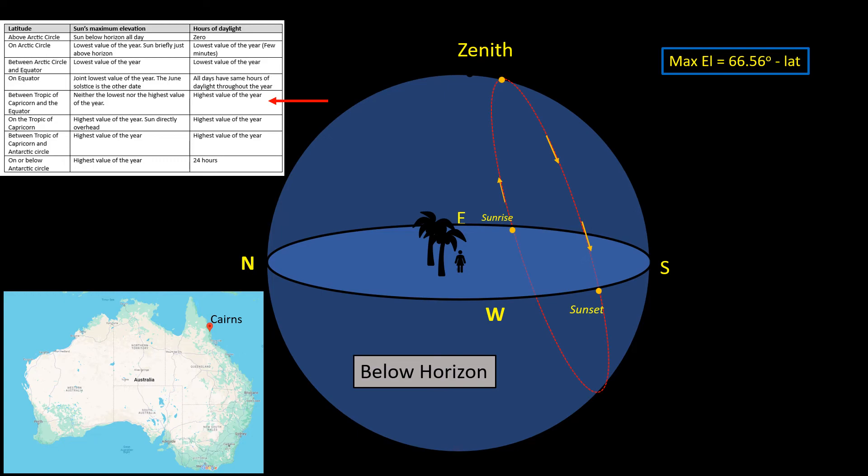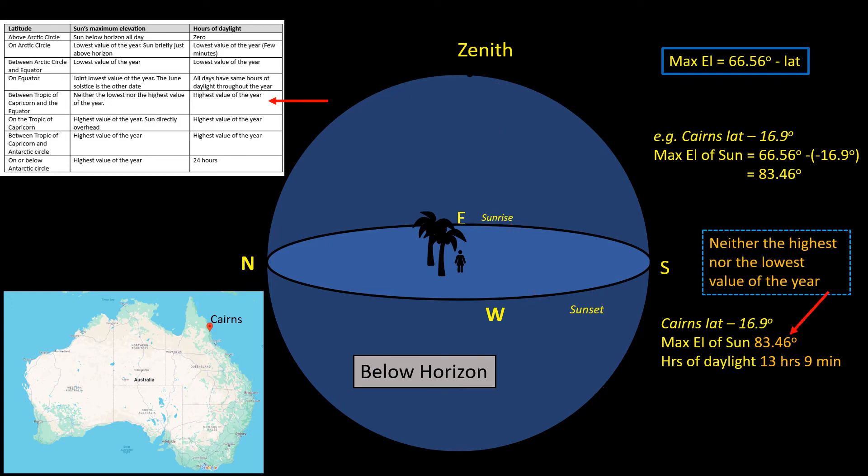For locations south of the equator, latitude is negative, so we have to add the latitude if we measure it in degrees south. So for Cairns in Australia, latitude minus 16.9 degrees, the maximum elevation of the sun is 83.46 degrees. But this isn't the highest elevation of the sun. This happens on two days either side of the solstice. The case for Cairns is February the 2nd and November the 10th.